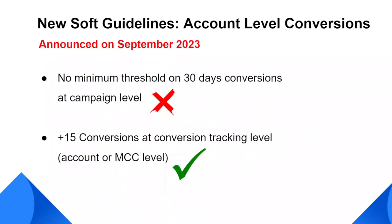Recent product developments on target ROAS bidding strategy say that there is no longer a minimum threshold on 30-day conversions at a campaign level. Instead, the updated soft guideline is a minimum of 15 conversions in the past 30 days at a conversion tracking level. This means that if you have many campaigns in your account that all use the same conversion action, and that conversion action has 15 conversions in the past 30 days, the target ROAS bidding strategy should be able to optimize any of those campaigns, regardless of which campaign generated the conversion.